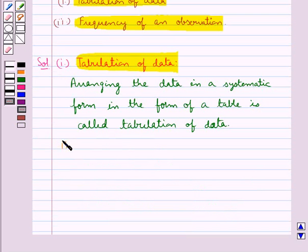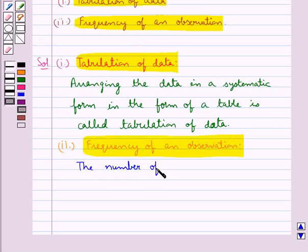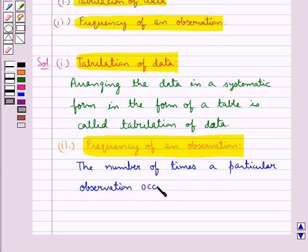Next we define frequency of an observation. The number of times a particular observation occurs is called its frequency.